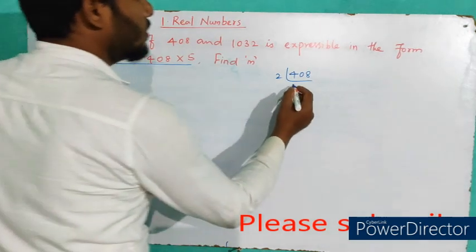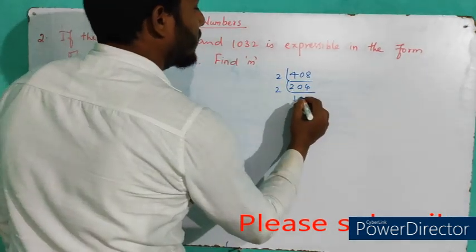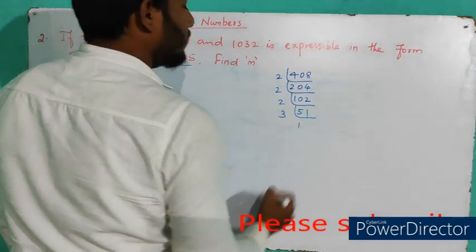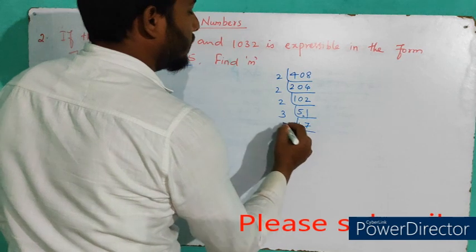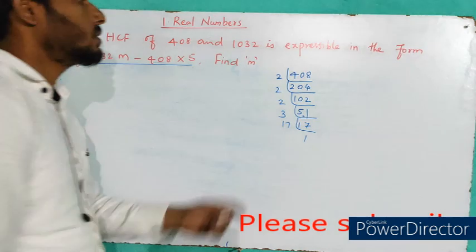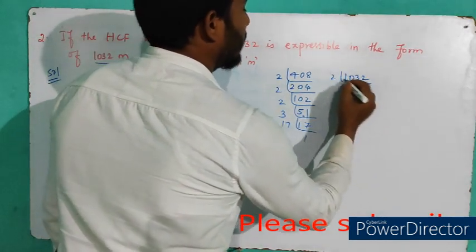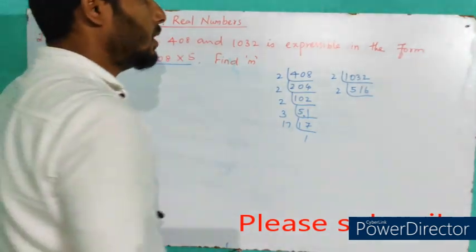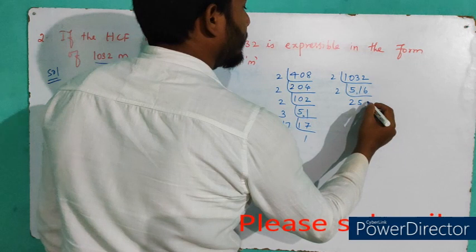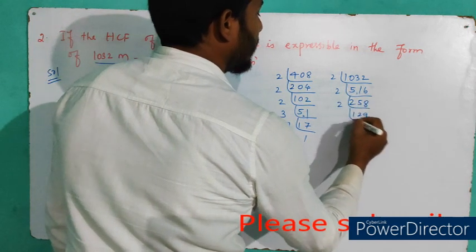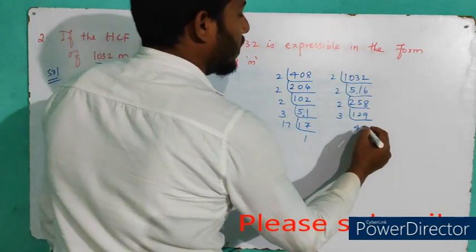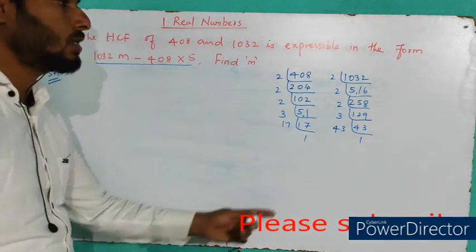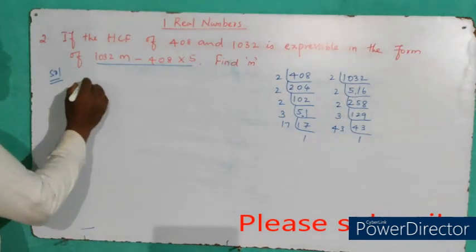Dividing 408 by 2 repeatedly, and continuing with primes, we get the prime factors. For 1032, we divide by 2, then by 3 (3 × 4 = 12), and then by 43, which is prime — 43 ones are 43. So the prime factors of 408 are 2³ × 3¹ × 17¹.